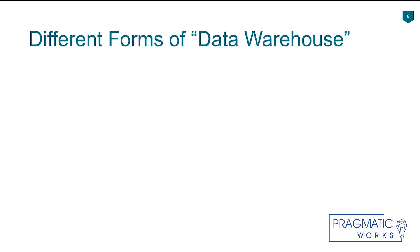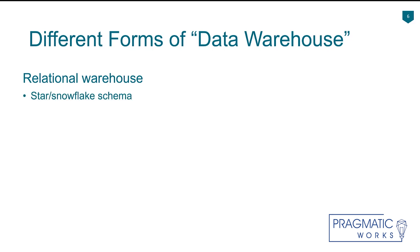The modern data warehouse can come in a few different forms. It could be a relational warehouse stored as a traditional star or snowflake schema, or it could be a hub and spoke model or a data vault model where we're storing a lot of data. We can then derive data marts from the larger data warehouse for reporting and analytics.